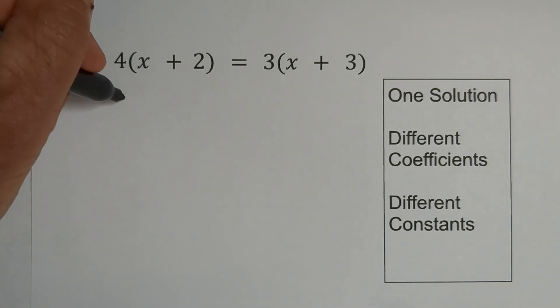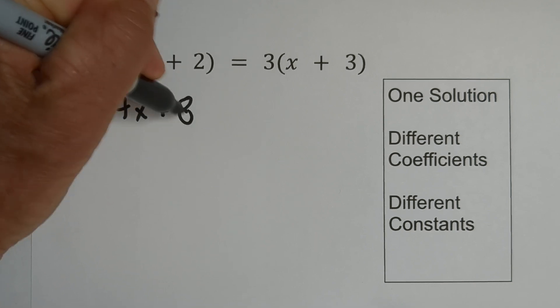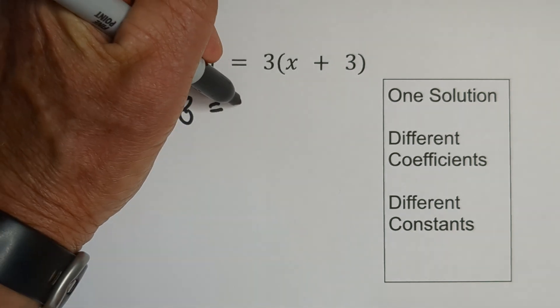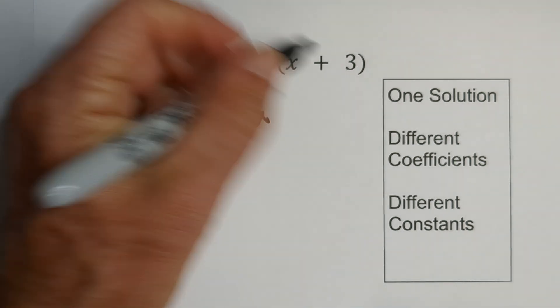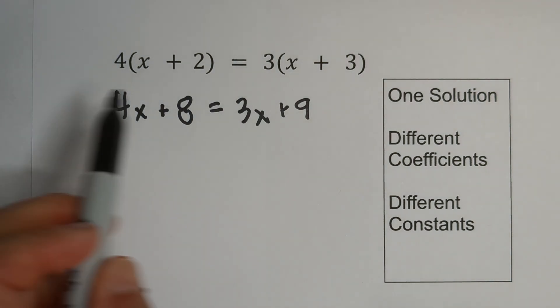We get four times x is 4x, four times two is a positive eight, and that equals, we'll distribute over here, three times x is 3x, and three times three is a positive nine. Now we're going to move variables to the left.